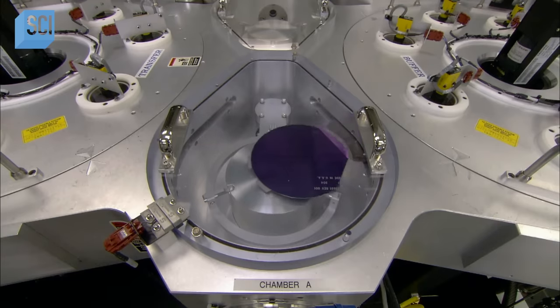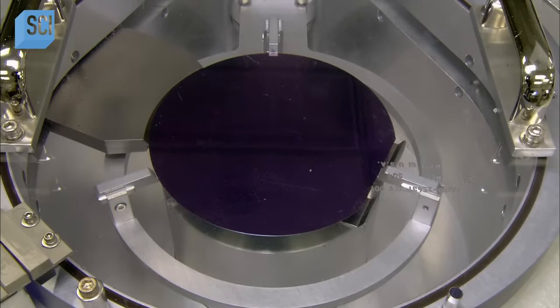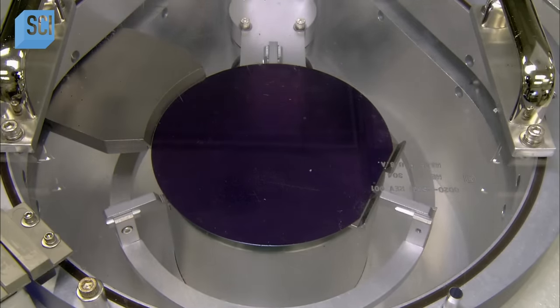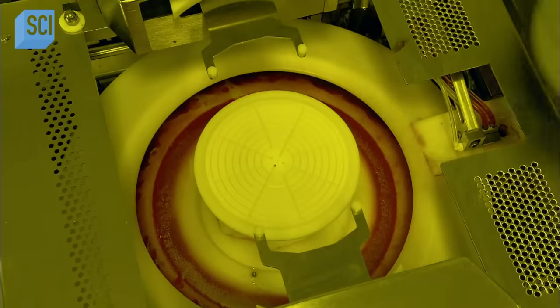Then it's into what's known as a sputter system. Here, inert gas ions bombard aluminum, causing it to sputter onto the wafer until an even layer accumulates. This aluminum layer will serve as a conductor of electricity.